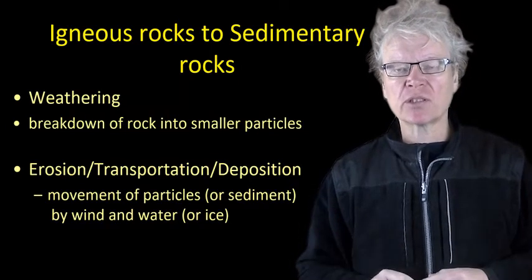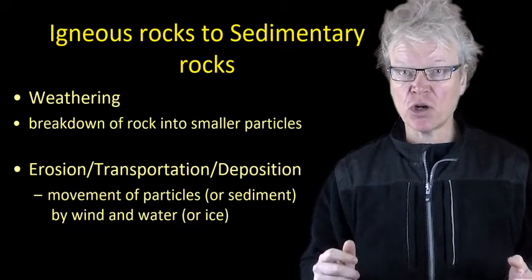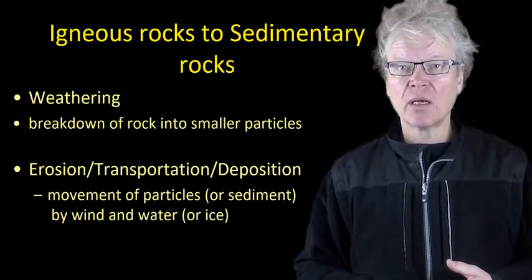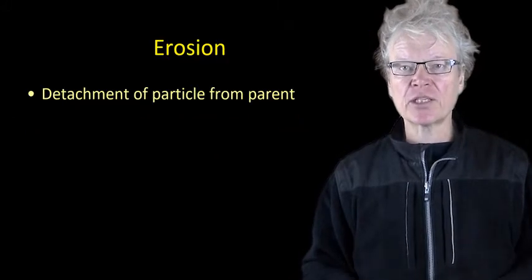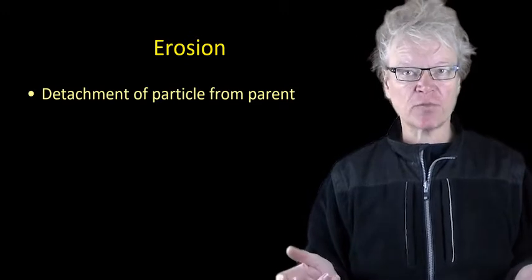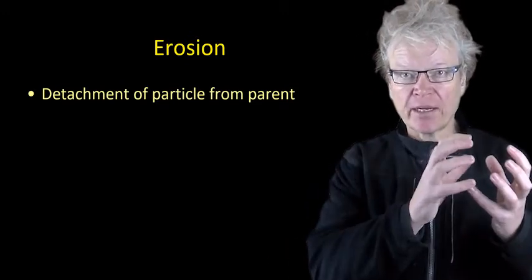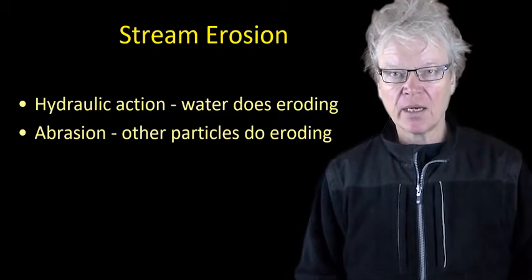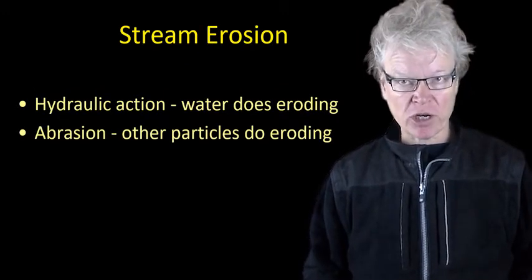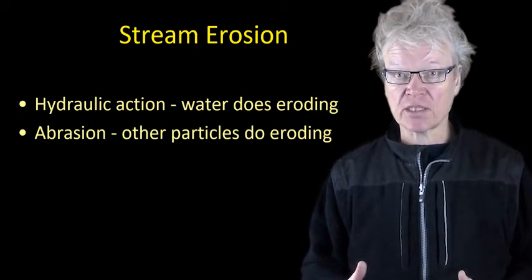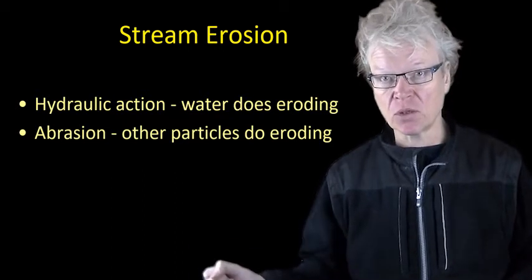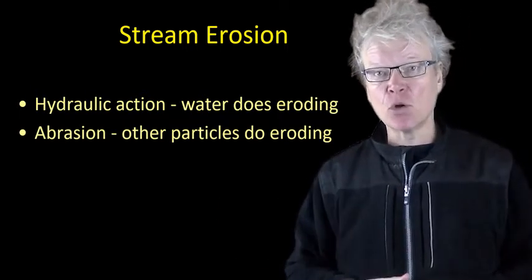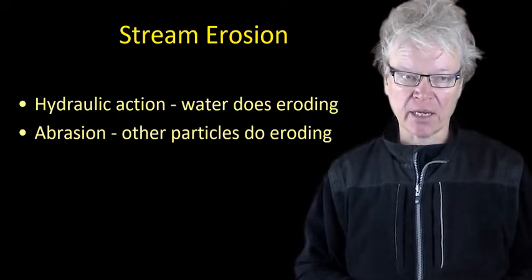How do we go from igneous rocks to sedimentary rocks? We need to go through the processes of erosion, transportation, and deposition, which are facilitated by usually water or wind. Erosion, simply defined, is the detachment of particles from the parent material - weathering breaks rock into smaller particles, while erosion is the movement of that particle away from its parent. In a river, there are two types of stream erosion: hydraulic action, where the water itself picks up the particle and moves it away, and abrasion, where particles already in the water bash into other particles and move them away.